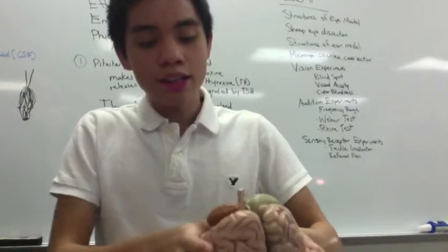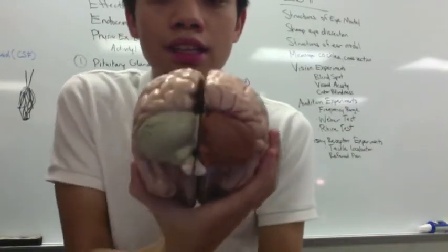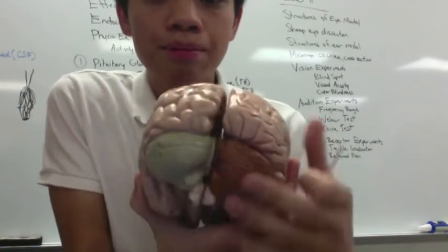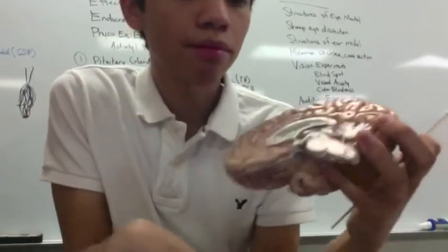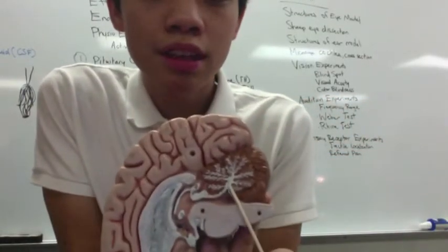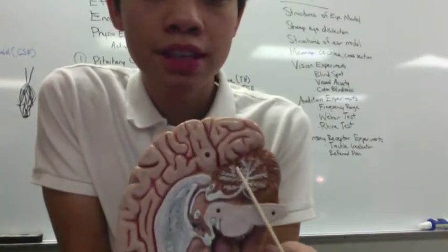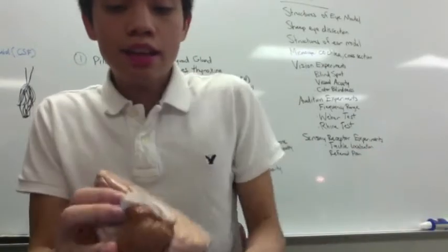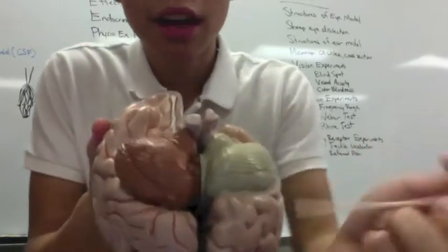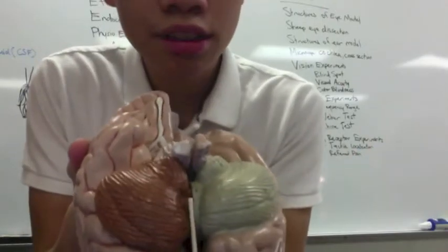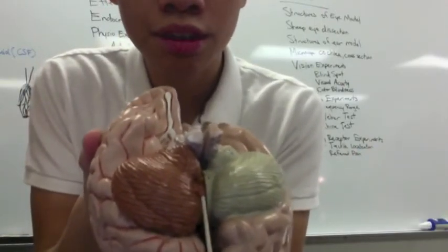Next we have the cerebellum — that's this one right here. You have the arbor vitae, which are the little branches that come off here. The vermis is the section that connects the two halves of the cerebellum.